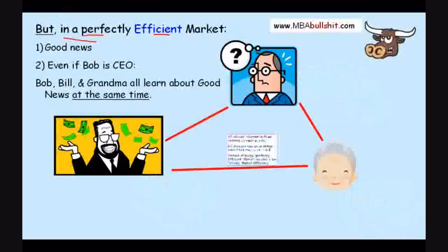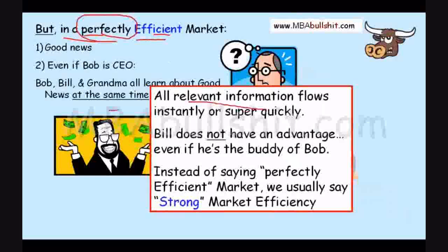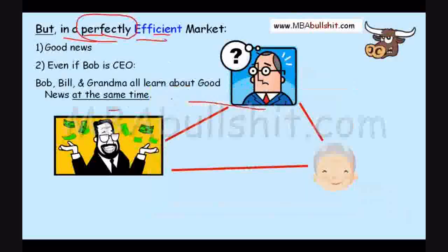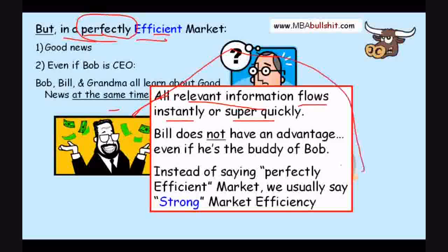Why is that? Because in a perfectly efficient market, the key word is 'perfectly efficient' — all relevant information about the company, such as the sales report, flows or travels instantly or super quickly between Bob, Bill, and grandma. So Bill does not have an advantage even if he's the buddy of Bob, the CEO.